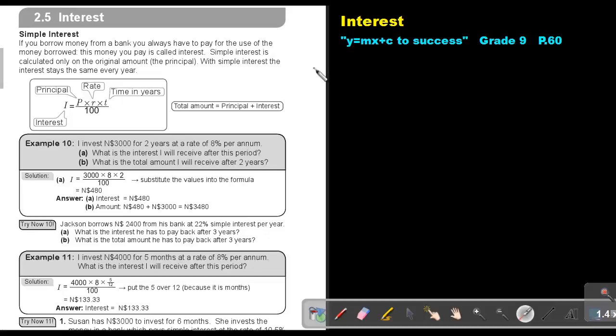Part 8. Interest. You will find this on page 60 in the Namibia Mathematics Grade 9 textbook, Y equals MX plus C to success.